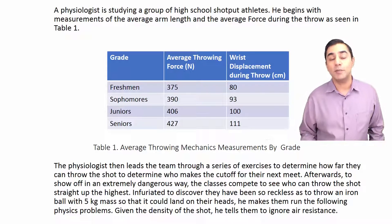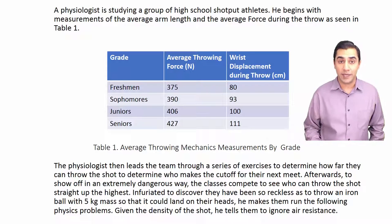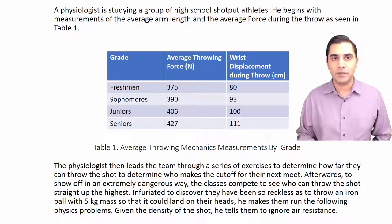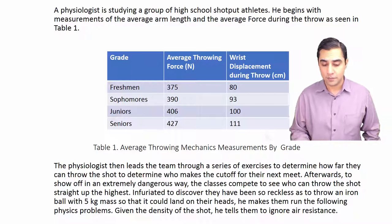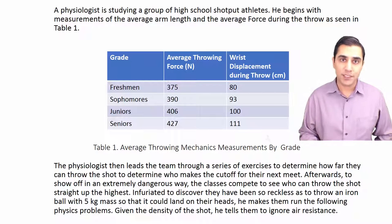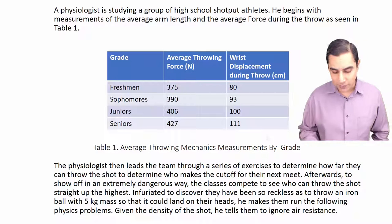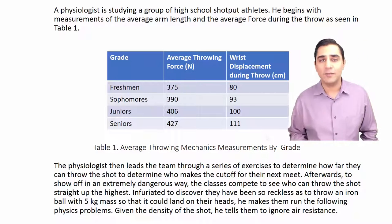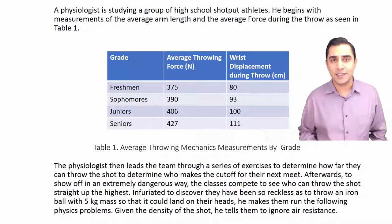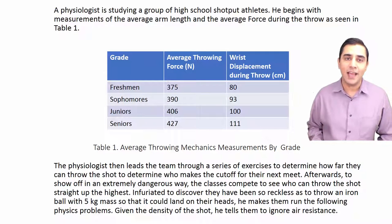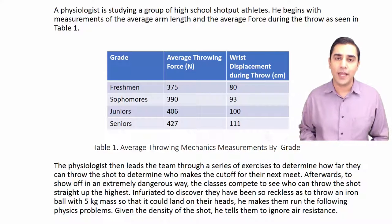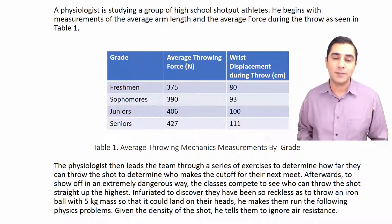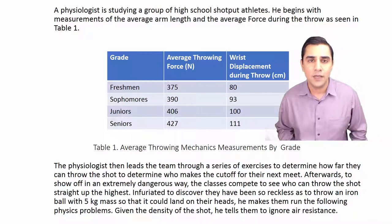A physiologist is studying a group of high school shot put athletes. He begins with measurements of the average arm length and the average force during the throw, as shown in table one. We look at table one, read the column headings, and we see grade, average force during the throw, and the wrist displacement in centimeters.